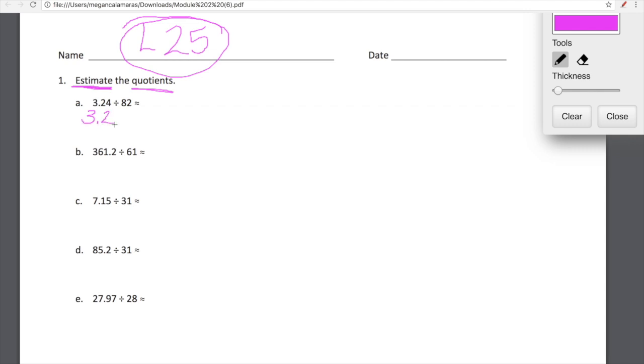So 3.24 divided by 82. Let's go ahead and round 3.24 to 3.2 or 32 tenths. We're going to divide 32 tenths. I'm going to round 82 to 80. If we have 32 tenths and we're rounding those 32 tenths into 80 equal groups, how many tenths are we going to have in each group? Well that's a little tricky, so let's go ahead and use the strategies that we learned in lesson 24 and let's decompose 80 so that we can really just tackle this mentally.